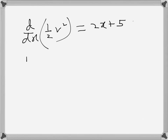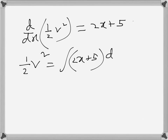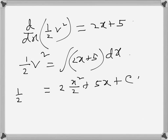We integrate both sides with respect to x. The differentiation on the left cancels upon integration, giving ½v². On the right, integrating 2x plus 5 gives 2x²/2 plus 5x plus c, which simplifies to x² plus 5x plus c.